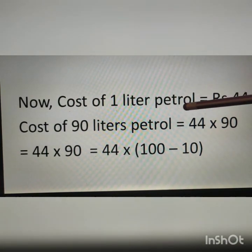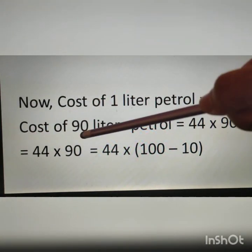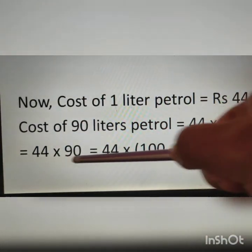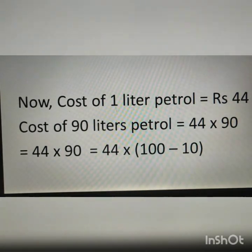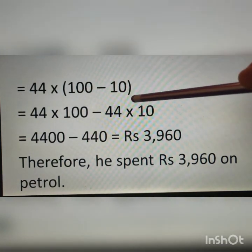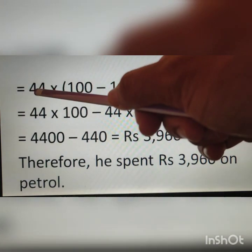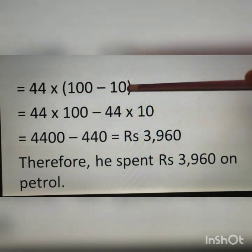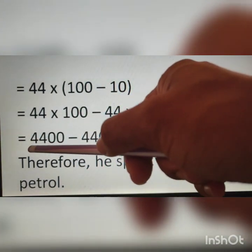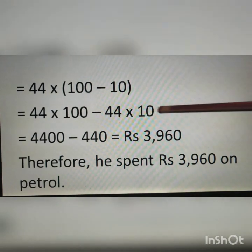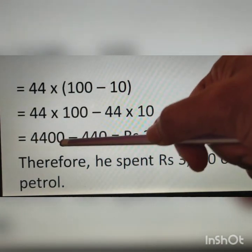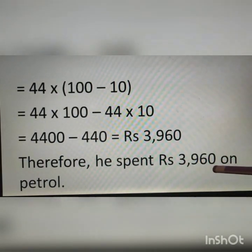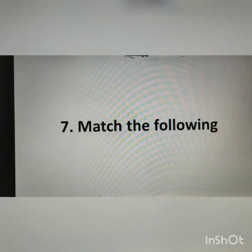In the question it is given cost of one liter petrol is rupees 44. Therefore cost of 90 liters petrol is equal to 44 multiplied by 90. We can write 90 as 100 minus 10 to make the calculation easier. By the distributive property: 44 into 100 minus 44 into 10, which gives 4400 minus 440, equal to rupees 3960. Therefore he spent rupees 3960 on petrol.